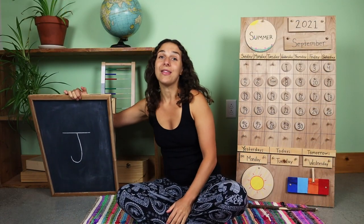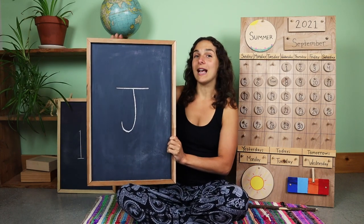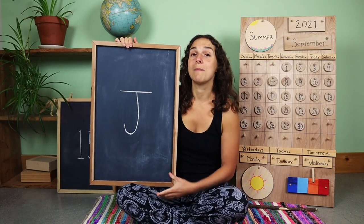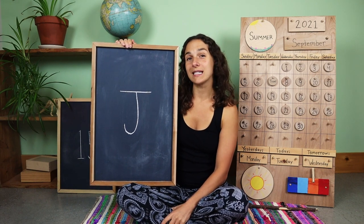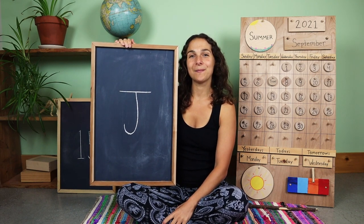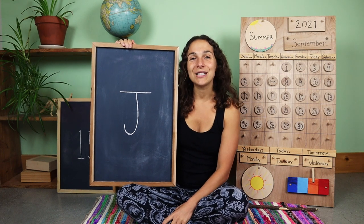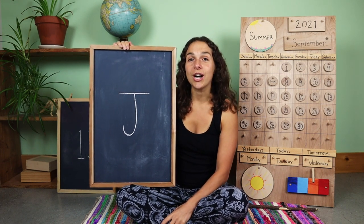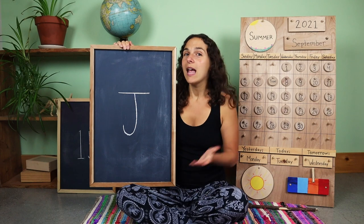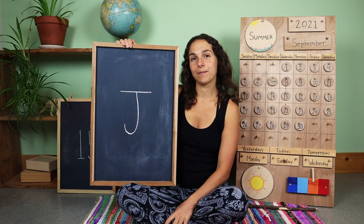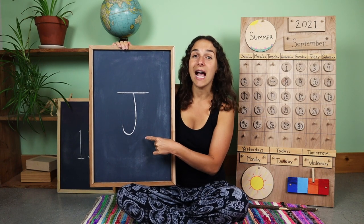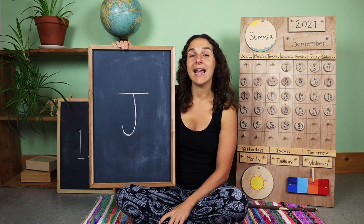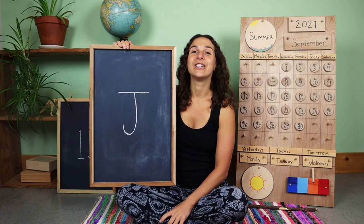Let's move on to the letter, the number, and the sign of the week. Yesterday we talked about this uppercase letter. Do you remember the sound that this letter makes? Let's do that together. Juh. Juh. And what uppercase letter is this? J. This is a capital J. Juh. Juh.